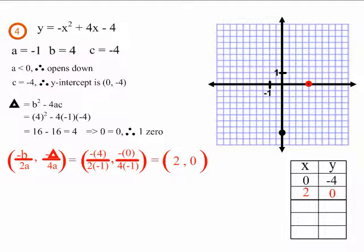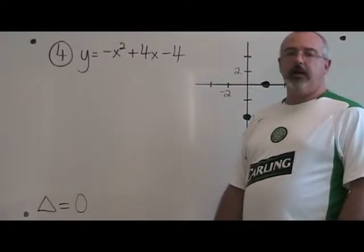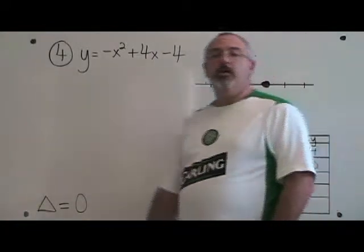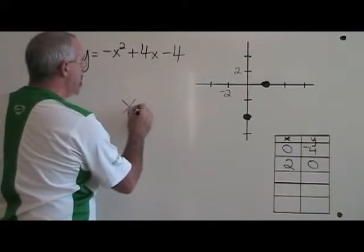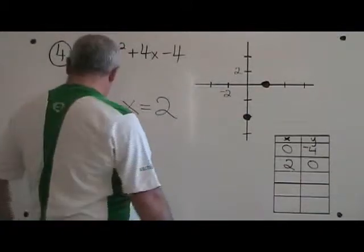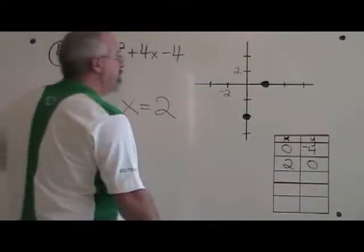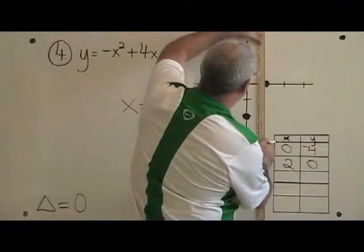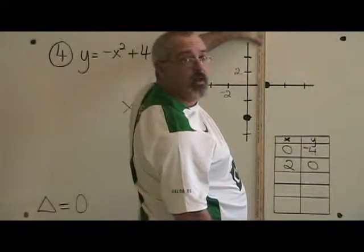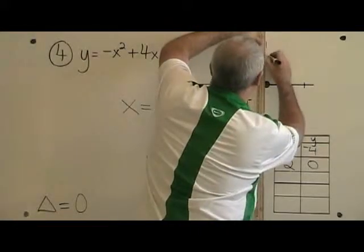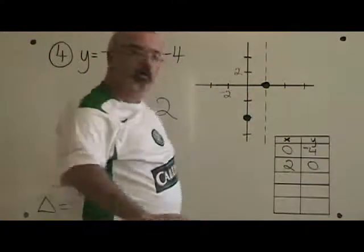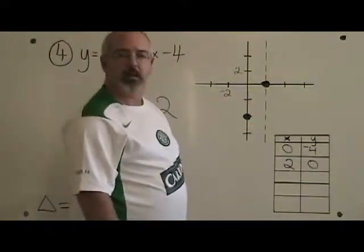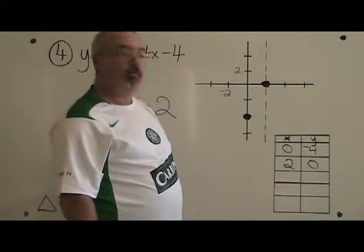This is what example three looks like after finding the equation of the axis of symmetry. This is what example four looks like before. To find the equation of the axis of symmetry of example four, we need to know the x coordinate of the vertex. The x coordinate of the vertex is two, therefore the equation of the axis of symmetry is x equals two. Let's put this onto our graph. The axis of symmetry is a vertical line that goes up and down through the vertex, so I draw a vertical line going through my vertex. I make sure to use a dotted line, and I make sure to label that line on the graph with the equation.